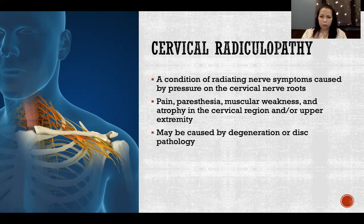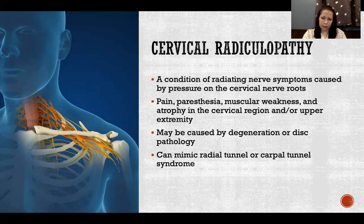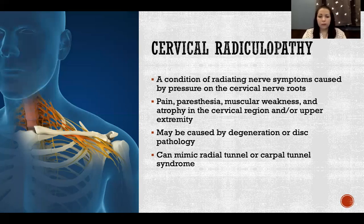Cervical radiculopathy can be caused by degeneration, disc pathology, an acute impact injury, or hypertonic muscles surrounding the path of those nerves. It can also mimic radial tunnel or carpal tunnel syndrome, because the same nerves potentially impinged at those locations could also be impinged at the cervical nerve root — producing the same symptoms. It is therefore important to address the entire path of the nerve to identify where the actual impingement is occurring, and the location may be determined by assessing the joints of the upper extremity.